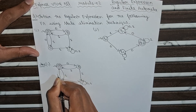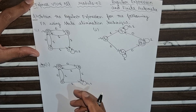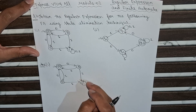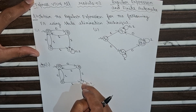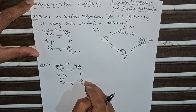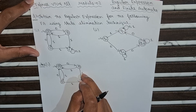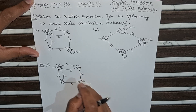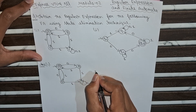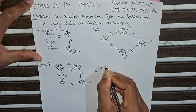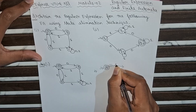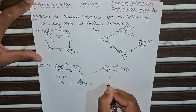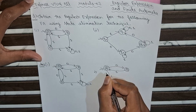Firstly, we will check if there is any dead state or not. It is clear from the finite automata that C is a dead state. The state C is reached and irrespective of input 1, the machine stays in C only, and there is no way to reach the final state. So we simply eliminate C from this finite automata.